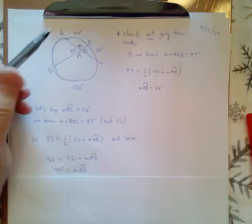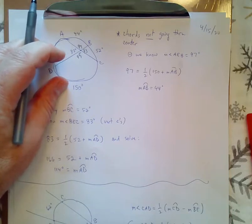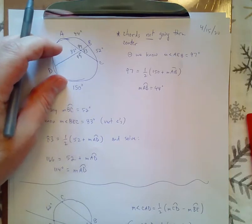So, this is the one key part of the 10.5 section that I want you to know. All right. The next section, also in 10.5, is when you have an angle that is outside the circle.